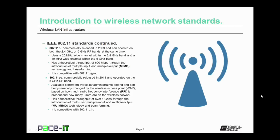802.11ac was commercially released in 2013 and operates on the 5 gigahertz radio frequency band. The available bandwidth varies by administrative settings and can be dynamically changed by the wireless access point based on how much radio frequency interference, or RFI, is present and how many users are on the wireless network. 802.11ac has a theoretical throughput of over 1 gigabit per second through multi-user MIMO technology and beamforming. 802.11ac is only compatible with 802.11g and n.